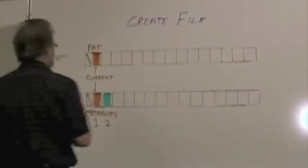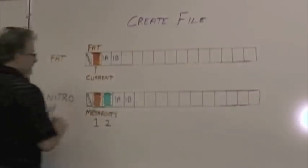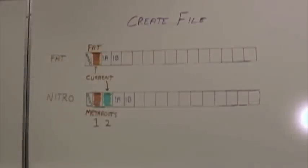Creating a file on each file system is done pretty much the same way. Write the data blocks and then update the system blocks, in this case the FAT or the metaroute.